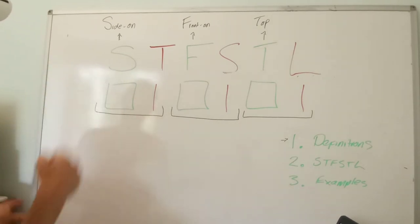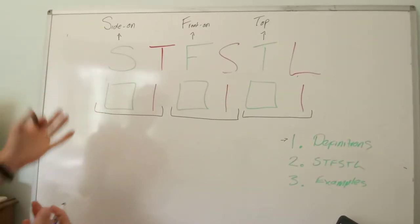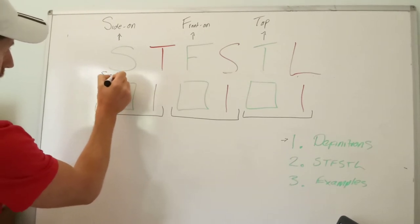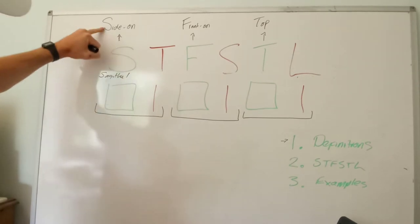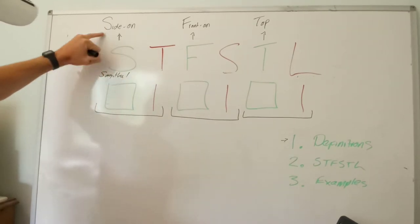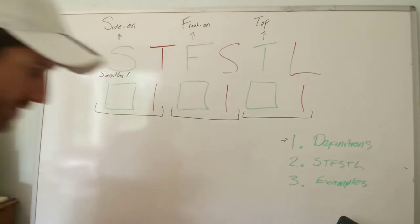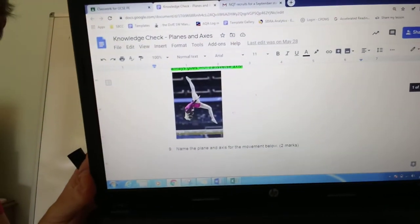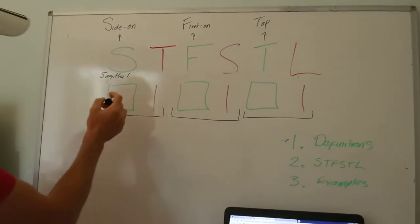So normally the S stands for a plane starting with S — sagittal. And S stands for side-on as well. So the sagittal plane is when you're looking at something from side-on. Quick example: gymnast — that picture is from side-on, so we're looking at the movement occurring in the sagittal plane.